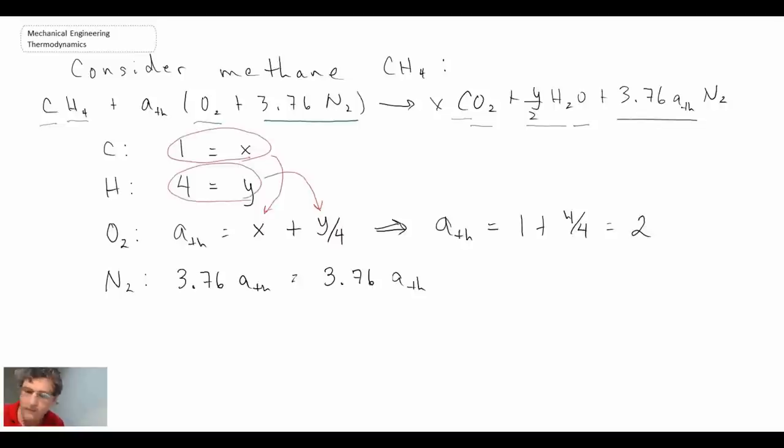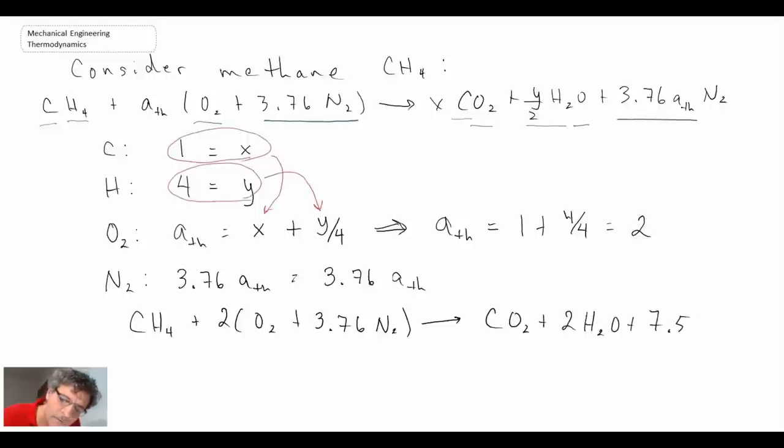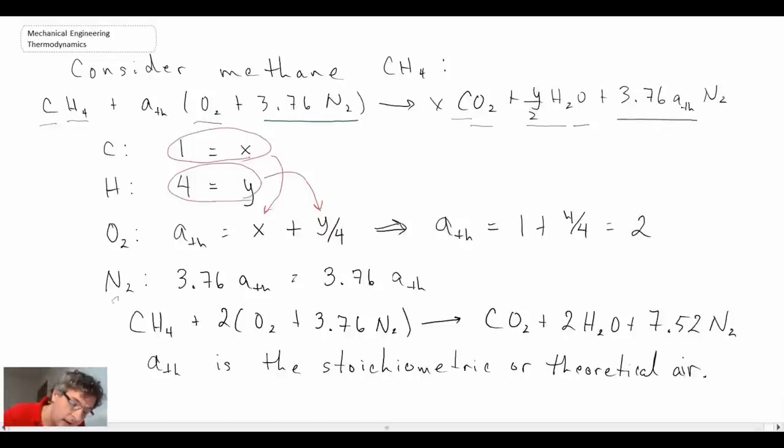With that, we can rewrite the oxidation reaction for methane as being the following. That would be our reaction equation, and ATH is the stoichiometric. So that would be our combustion or reaction equation, and if we had a stoichiometric balance between the air and the fuel coming in.